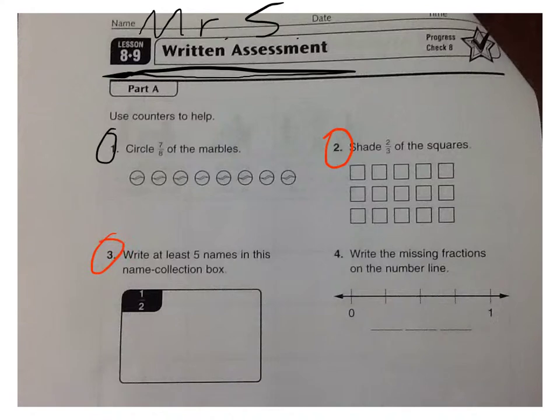Number 3. Write at least five names in this name collection box. So in this box you'll write five names, five different names for writing one-half. Five different ways to write it.